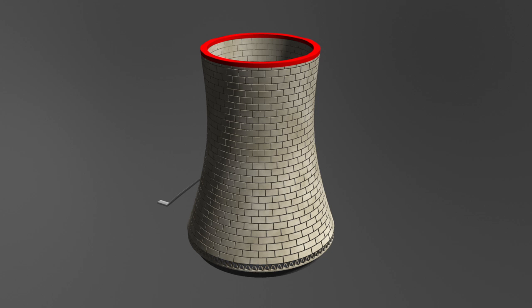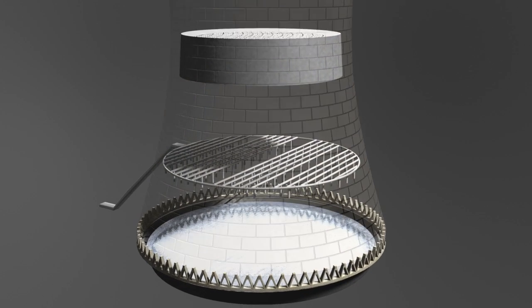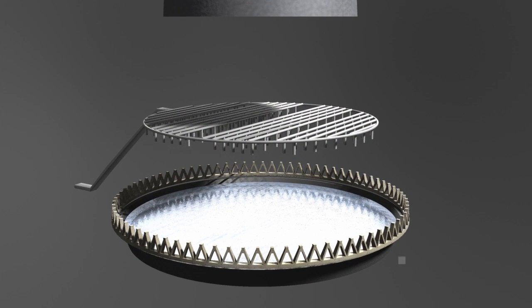Natural draft wet cooling towers can be up to 200 meters tall and are made up of a cold water basin, an air inlet near the bottom of the tower, spray nozzles and a drift eliminator.